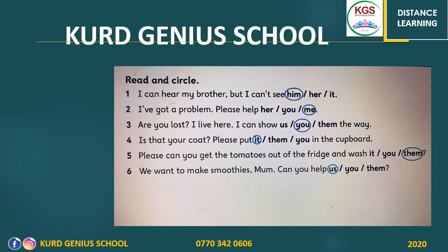Number three: 'I can't hear my brother' — I'm talking about my brother so I use 'him'. 'I've got a problem, please help' — instead of 'I', I have to say 'me'. 'Are you lost? I live here, I can show you the way.' For the coat — it's a thing, so use 'it': please put it in the cupboard. 'Please can you get the tomatoes out of the fridge and wash' — tomatoes are plural, so use 'them'. The last one: 'We want to make smoothies, Mom, can you help us?'